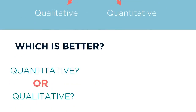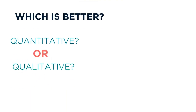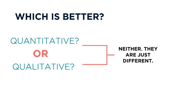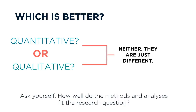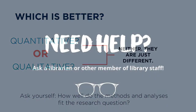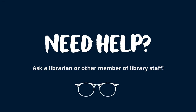So, what makes a better empirical study? Quantitative studies aren't automatically better or worse than qualitative studies — these two approaches are just different. Sometimes researchers even combine approaches to present a fuller picture through a mixed methods study. When you're evaluating a study's approach, ask yourself: how well do the methods and analyses fit the research question? If you need help with quantitative, qualitative, and mixed methods studies, you can always ask a librarian or other member of the library staff.